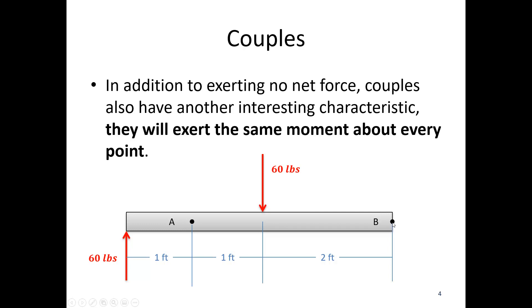If I were to look over here at point B, let's figure out that moment. So I have 60 pounds times four feet. So 60 times four is 240 pounds clockwise. Here I have 60 pounds times two feet.